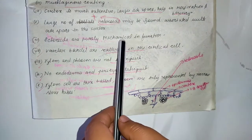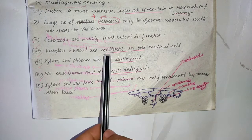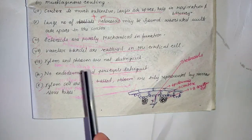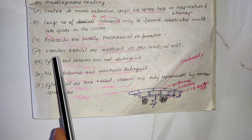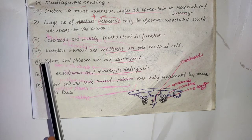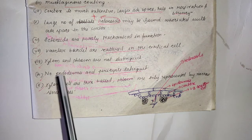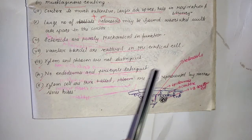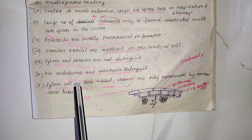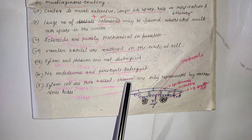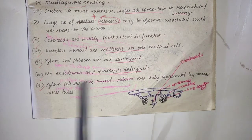Vascular bundles are scattered in the cortical cells. Xylem and phloem are not well distinguished from each other. No endodermis and pericycle are distinguished. Xylem cells are thin-walled, and phloem is represented only by narrow sieve tubes.